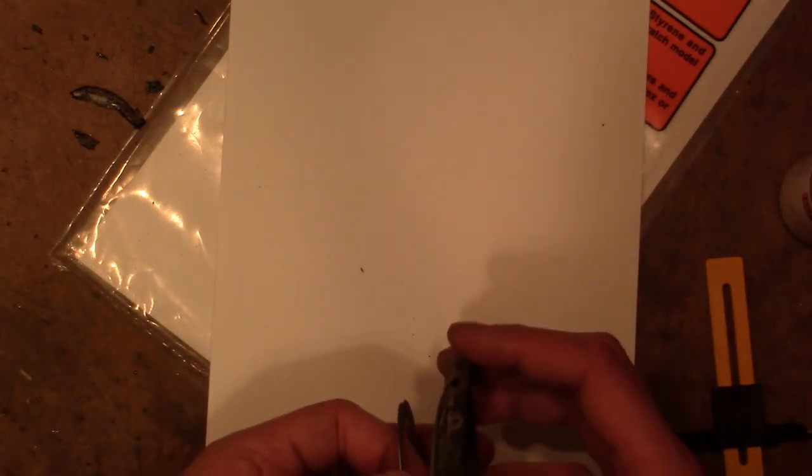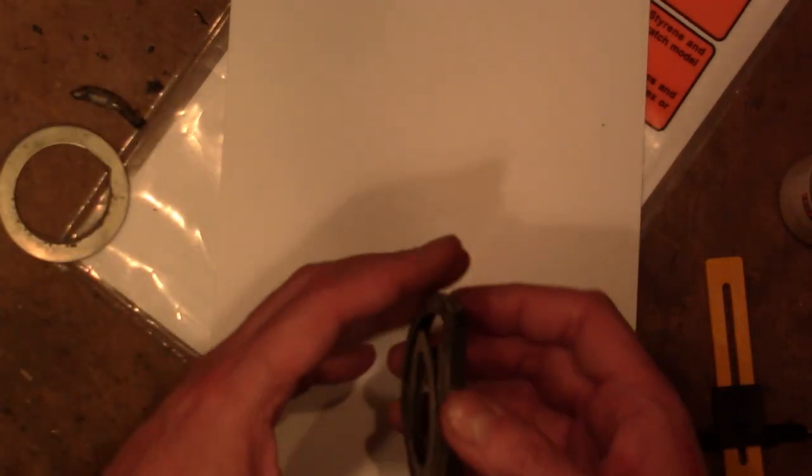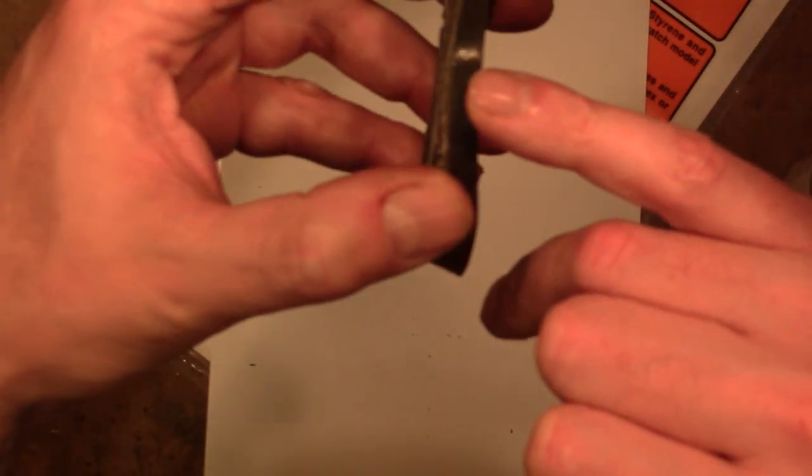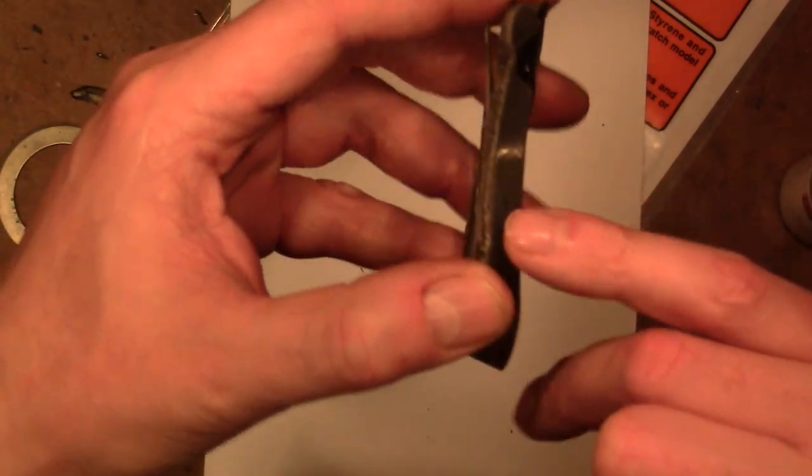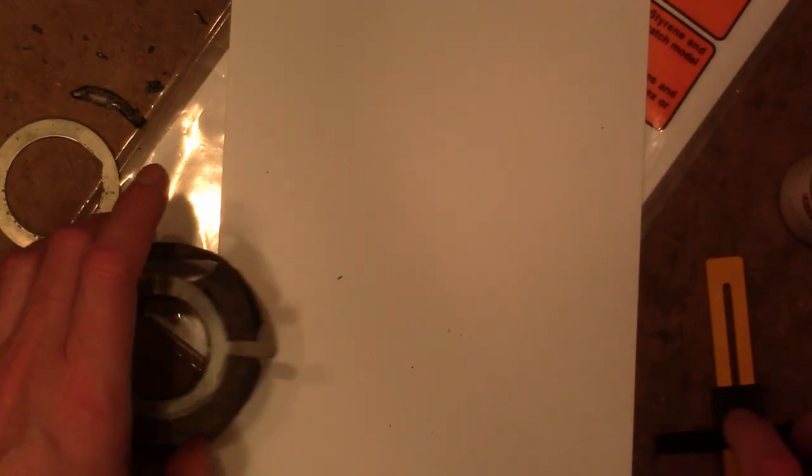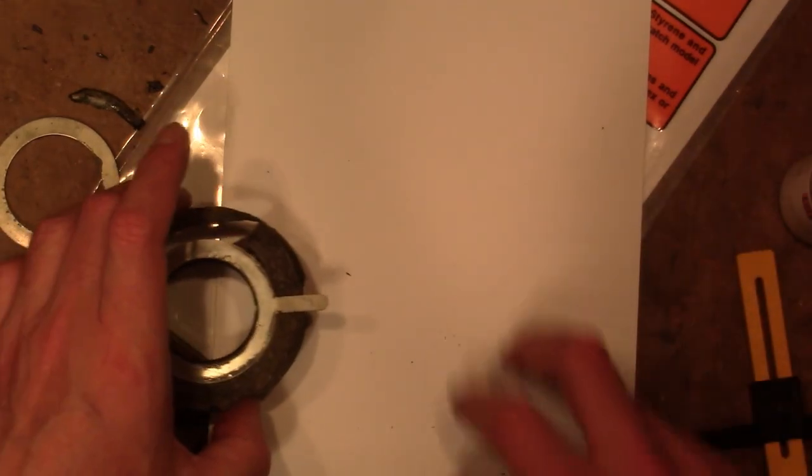So how do we go about this? Well, if you want to save yourself some time and you can find it, buy a strip of plastic this width, whatever width your yoke cover is. This is all I've got to work with so I'm going to have to cut all my stock out of this.